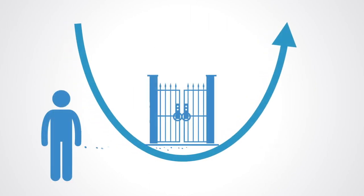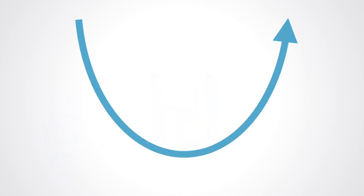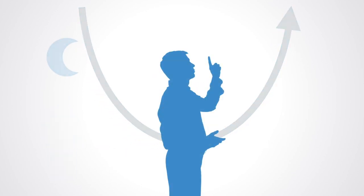At the bottom of the U lies an inner gate that requires us to drop everything that isn't essential. This process of letting go of our old ego and self and letting come our highest future possibility. The essence of presencing is that these two selves, our current self and our best future self, meet at the bottom of the U and begin to listen and resonate with each other.